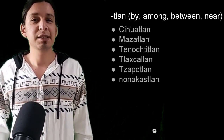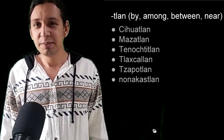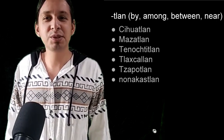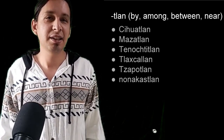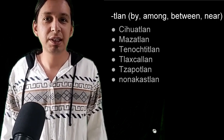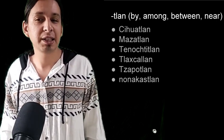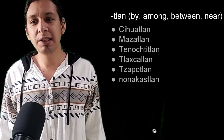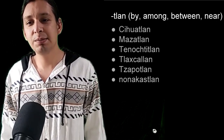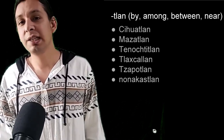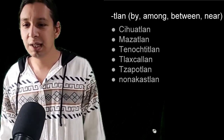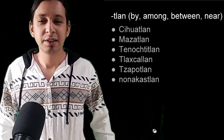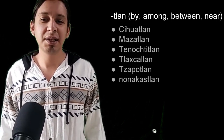Now we'll look at place endings. If you go almost anywhere in central Mexico, sometimes southern Mexico or Central America, you'll find Nahuatl words for cities, towns, mountains, or valleys with similar place endings. Very commonly you'll see -tlan. For example, Siwatlan — place of women; Mazatlan — place of deer (mazatl); Tenochtitlan — place of the rocky cactus fruit; Tlaxcalan from Tlaxcaltlan — place of tortillas; Zapotlan — place of the zapotl fruit. The general meaning of -tlan is 'place of' or 'by, among, near.'